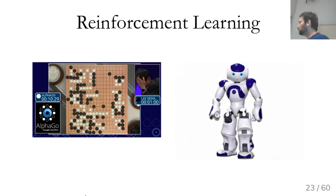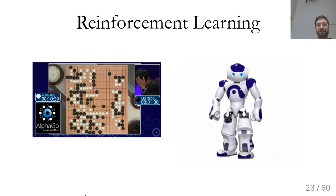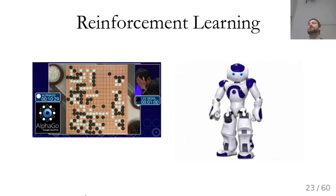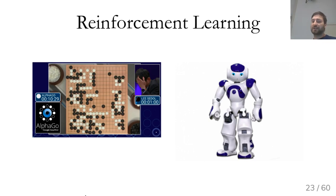Finally there's reinforcement learning, which was popular in the 1990s and has become more popular recently due to breakthroughs in games. AlphaGo beat the world champion in Go using deep neural networks and deep reinforcement learning — surprising because most people thought superhuman Go was a decade or two away. The state space of Go is very large. DeepMind is now working on StarCraft and is at roughly expert human level.